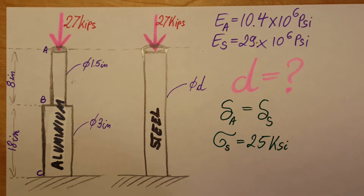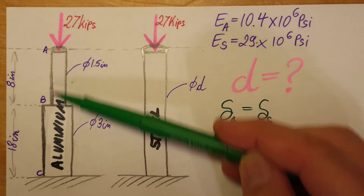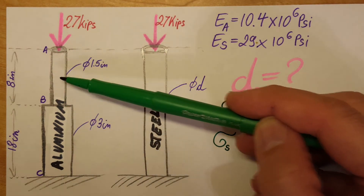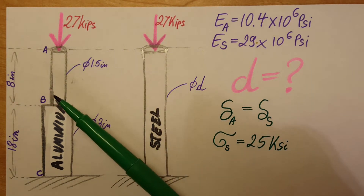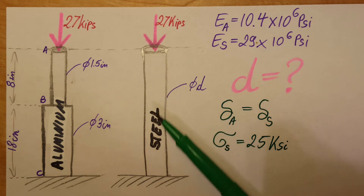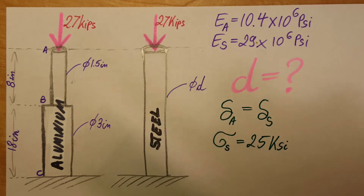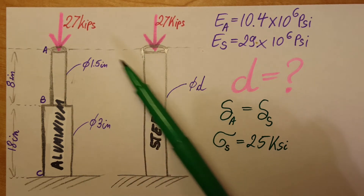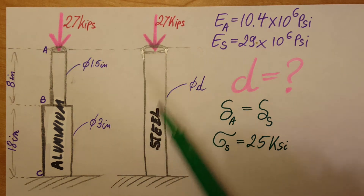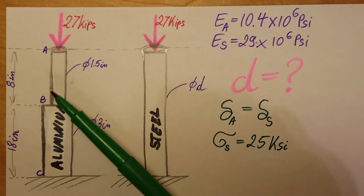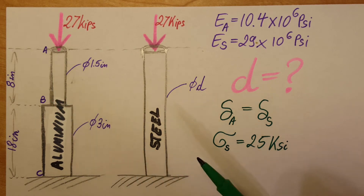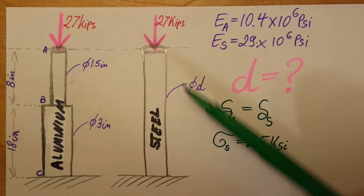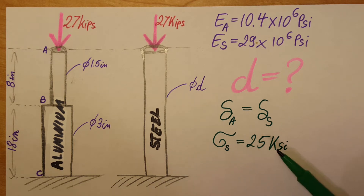This is a strength of materials problem. We have an aluminum rod ABC and we want to replace it with a steel rod. We need to find the diameter of the steel rod that meets two conditions: the deformation under load will be the same as for the aluminum rod, and the stress in the steel rod will not exceed 25 ksi.